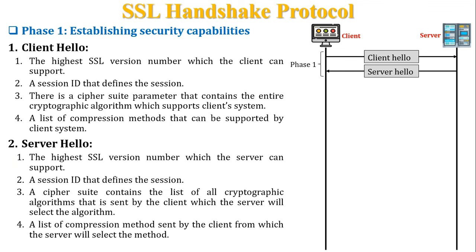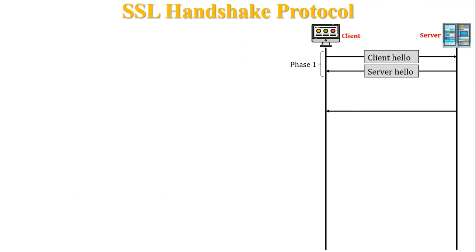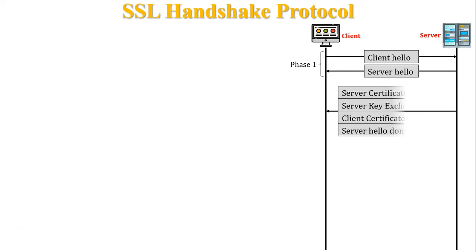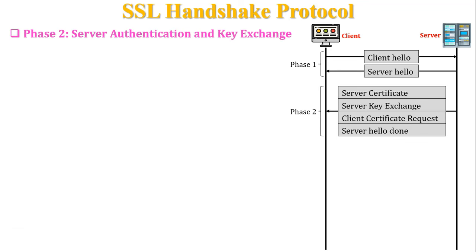After completion of Phase 1, the server sends a message to the client containing four fields: server certificate, server key exchange, client certificate request, and server hello done. This message is called Phase 2, which represents server authentication and key exchange.